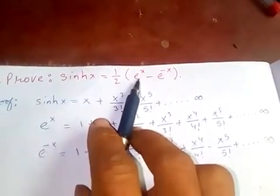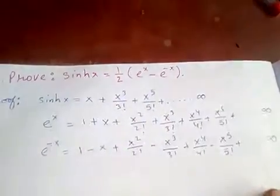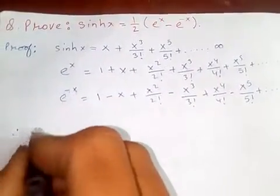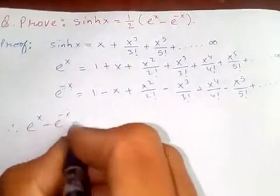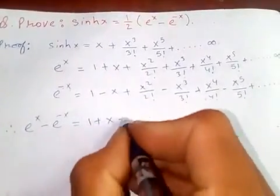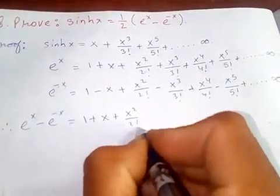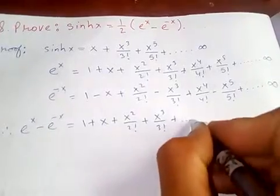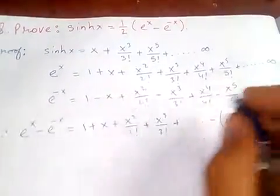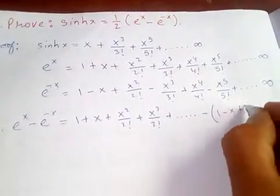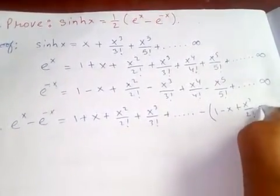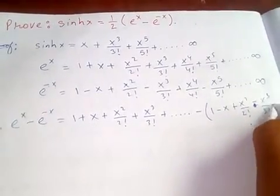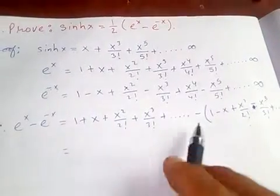Now in order to prove this, we need to compute e to the x minus e to the negative x. So we write: e to the x is 1 plus x plus x squared over 2 factorial plus x cubed over 3 factorial and so on, minus e to the negative x, which is 1 minus x plus x squared over 2 factorial minus x cubed over 3 factorial and so on.